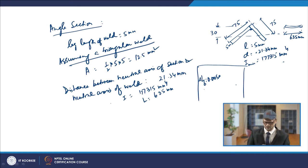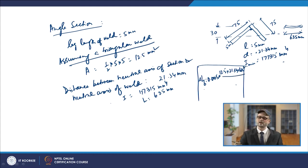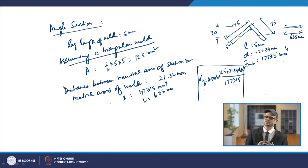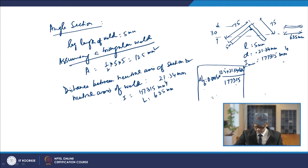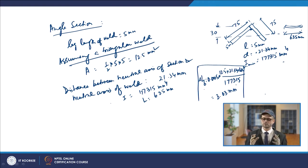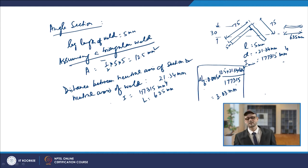Applying the formula δ_LB = 0.005 × A × D × L² / I: substituting A = 12.5 mm², D = 21.34 mm, L = 635 mm, and I = 177,315 mm⁴, the longitudinal bending comes out to be approximately 3.03 mm. This is the calculation for longitudinal bending in the case of an angle section.